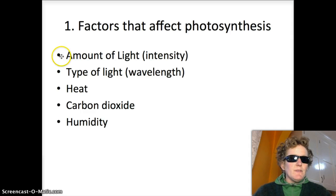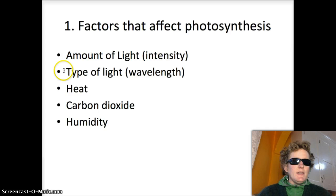We can look at five different factors that affect the rate of photosynthesis. The first one is the amount of light. Is it a sunny day? Is it a cloudy day? If you're using an artificial light source, how close is it? The type of light, mostly the color, also affects photosynthesis. We'll talk more about this later in the lab. Heat, the temperature the plants are at, carbon dioxide, how much is available for the plants, and humidity also affect photosynthesis.